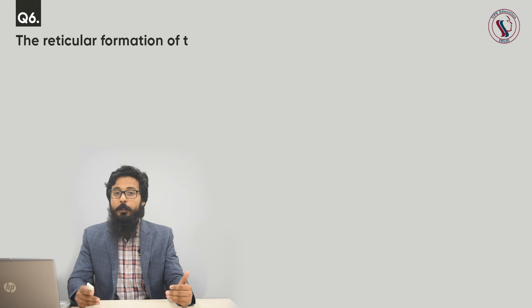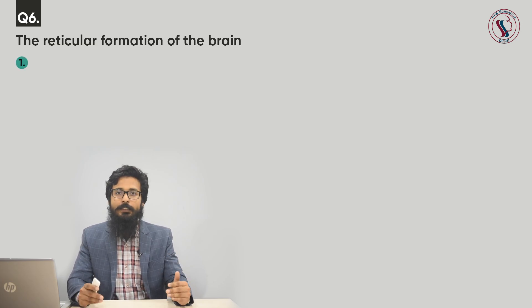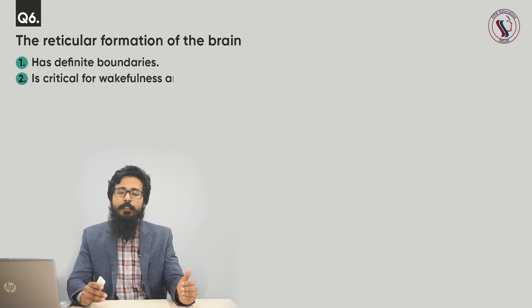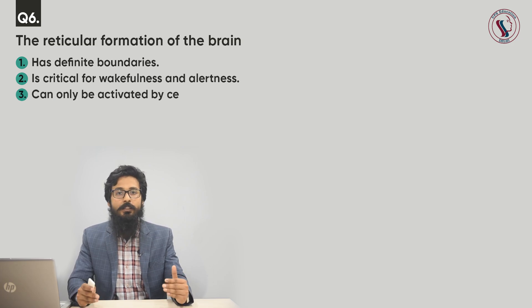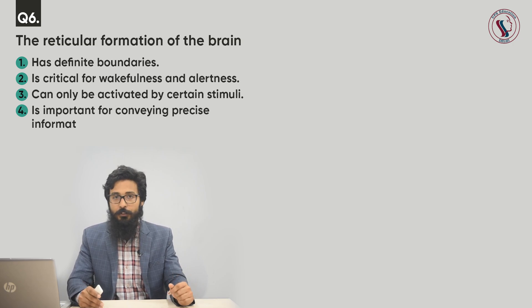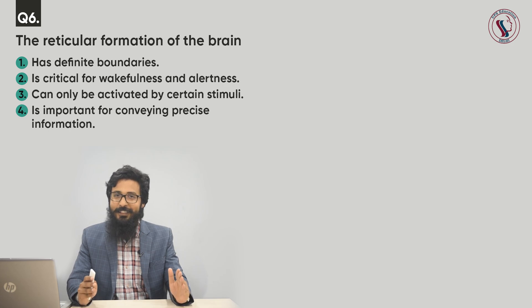Question number six. The reticular formation of the brain: option one, has definite boundaries; option two, is critical for wakefulness and alertness; option three, can only be activated by certain stimuli; option four, is important for conveying precise information. The correct answer is critical for wakefulness and alertness.